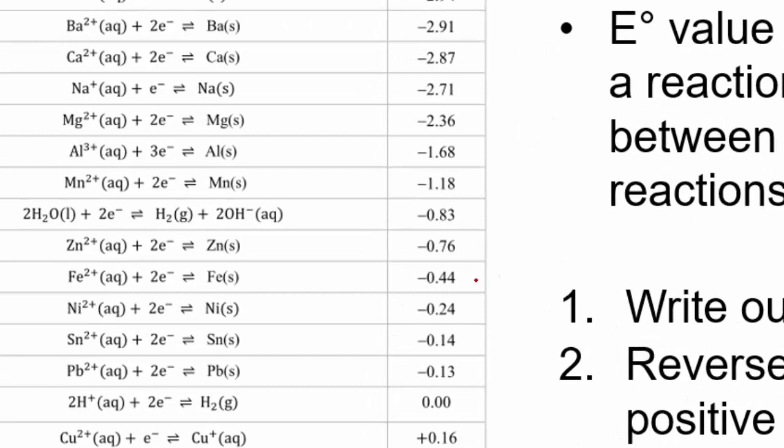So for instance, if we grab these two here, you'll then take the one that is the most positive and leave it as it is and take the one that is less positive, which is this one here, reverse the sign and make it go in this direction.